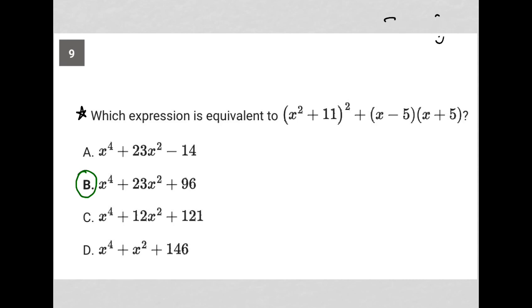This process does not require simplification. Instead, it utilizes our understanding of what to do when we see variables in the question and we see variables in the answer choices. Whenever we see that, most, you know, 9 out of 10 times, it means we can use a strategy called plug in your own number. PIYON.